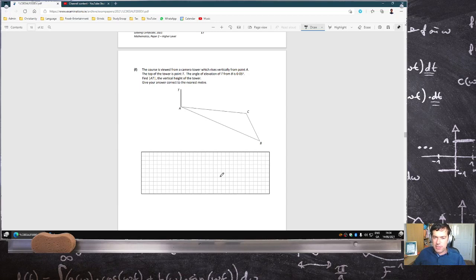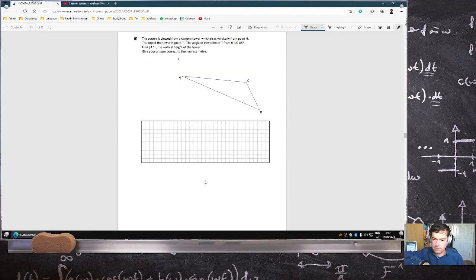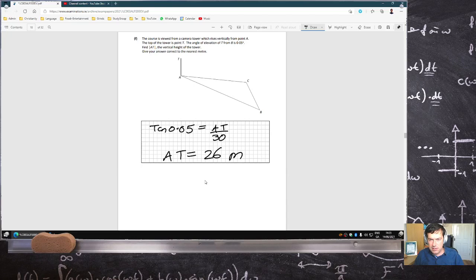The course is viewed from a camera tower which rises vertically from point A. The top of the tower is T. The angle of elevation from B is 0.05 degrees only. Find AT, the vertical. So this is just a Sakatoa question. I'm going to take a lunch break now. Sorry to leave you in suspense. I'll just finish this question. 0.05 equals AT over 30. So AT. Now, be careful. That 30 is kilometers. So it's 30,000 times tan of 0.05. So the tower to the nearest meter is 26 meters. Okay.